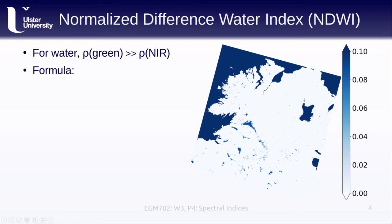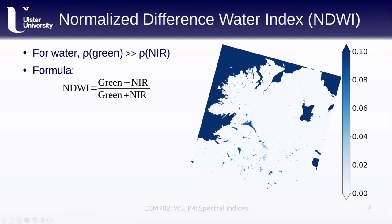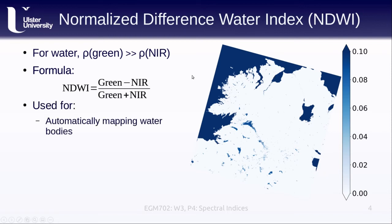To derive the NDWI for liquid water, we take the green reflectance minus the near-infrared band, divided by the sum of the two. As you can see in the image here, high values of the NDWI indicate water bodies — either the ocean or the different lakes and loughs we see within Ireland. We can use this for mapping water bodies and also for flood detection.